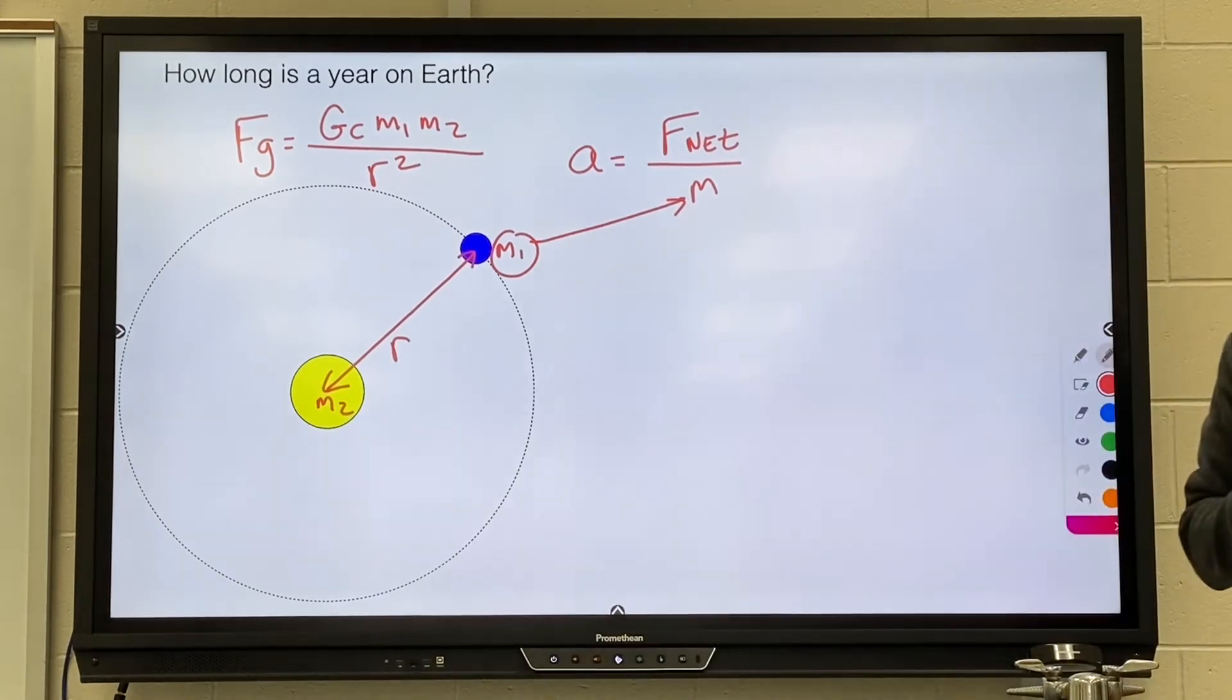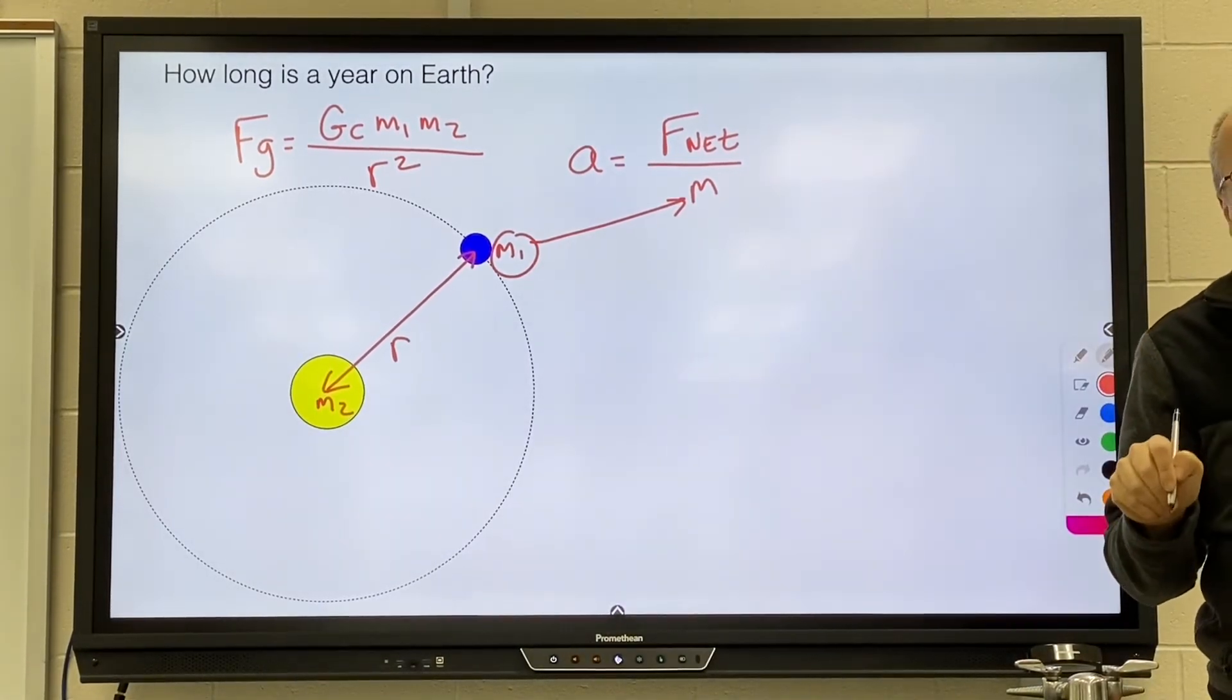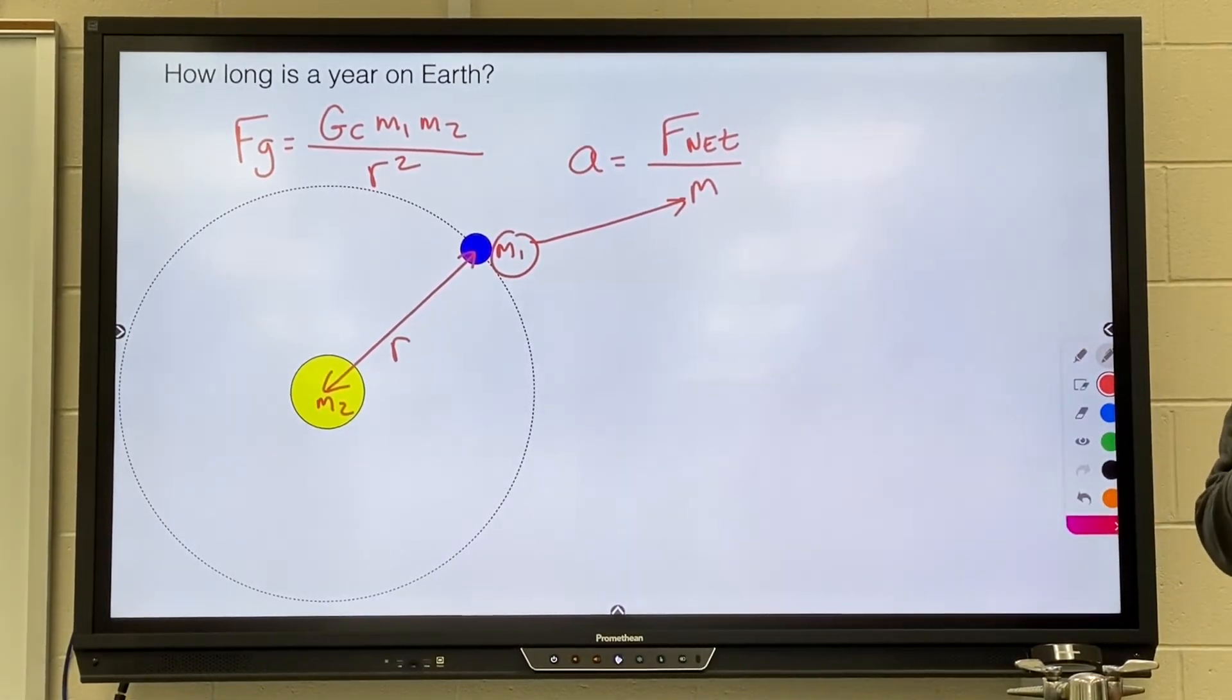Make sure the mass is the mass of the Earth. That's the one that's going in the circle. Don't use the mass of the sun there. The sun is relatively stationary for this system.